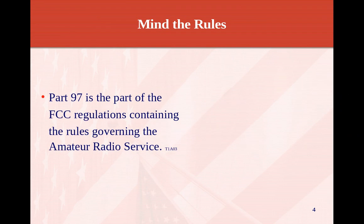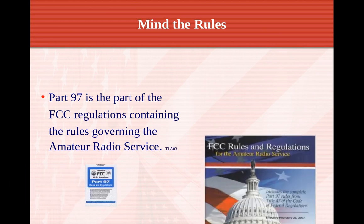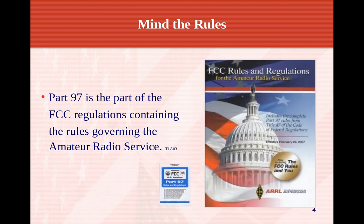Part 97 is the part of the FCC regulations containing the rules governing amateur services. You can actually download this off the FCC website. If you do print it out, it's going to be about a two-inch three-ring binder — there's a lot of information in there.